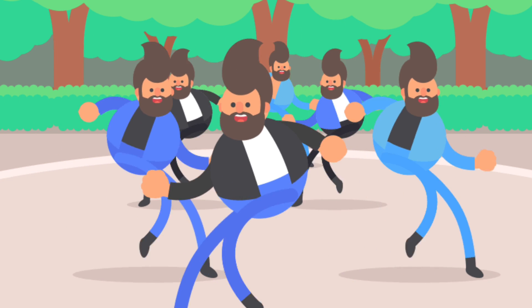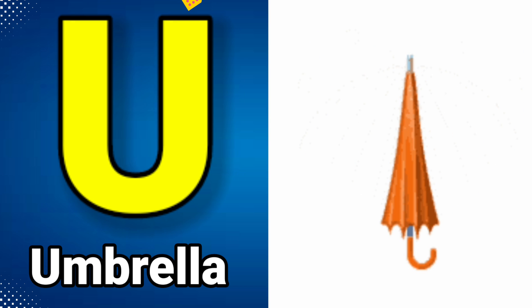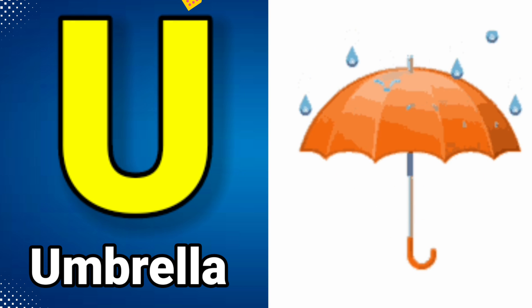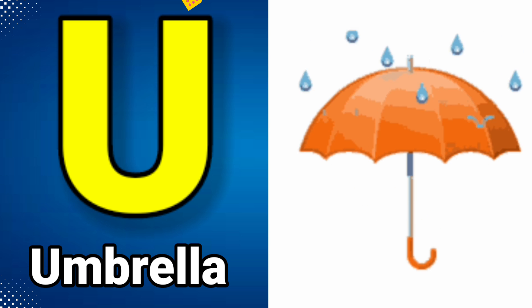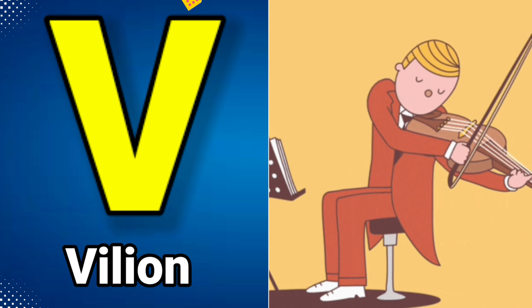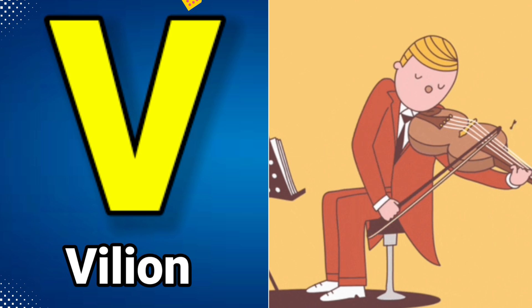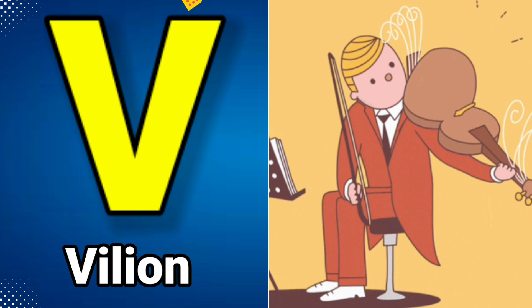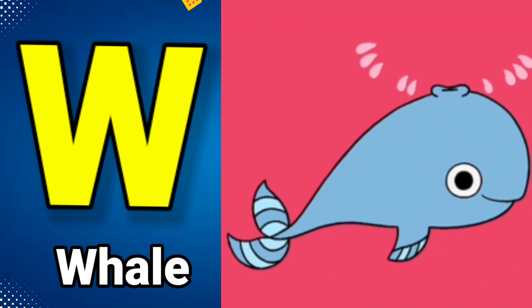U is for Umbrella. U-U-Umbrella. V is for Violin. V-V-Violin.